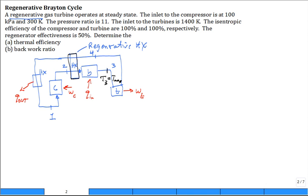So what they do in the textbook is they call this state X and this state Y. So it goes from two to X before it goes into the burner. And it goes from four to Y before it goes to the other heat exchanger to reject the heat.